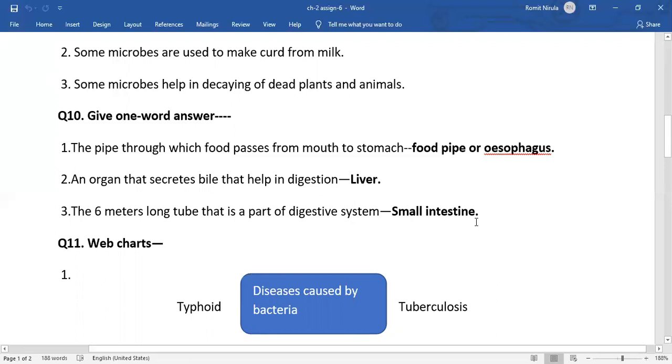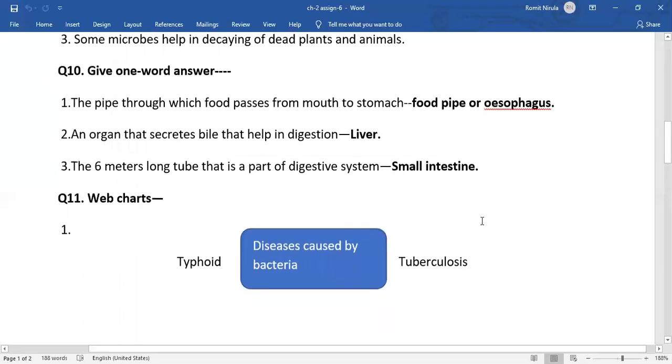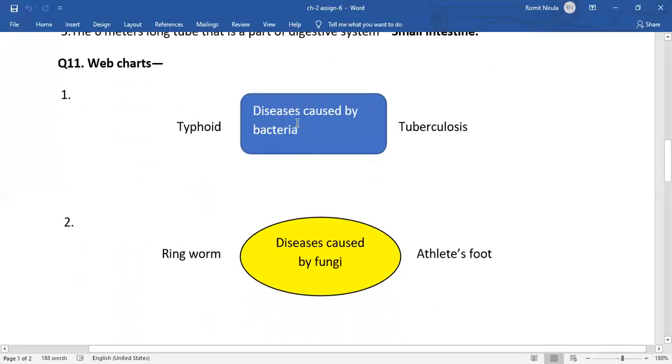Now web charts: Diseases caused by bacteria: typhoid and tuberculosis. Number two, diseases caused by fungi: ringworm and athlete's foot.